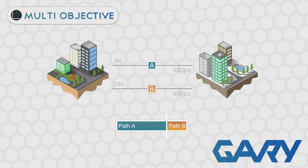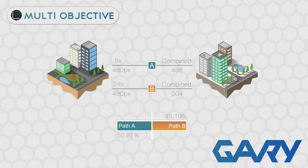So when caring about distance both paths are equally good, and when caring about time path A is three times as fit. What would you expect the fitnesses to be when we take both objectives into account? Well, the combined fitness for path A would be 480 pixels plus 8 seconds — so 488 — and for path B: 480 pixels plus 24 seconds = 504. That means path A has a 50.81% chance of being selected and path B has a 49.19% chance — almost 50/50, even though one path takes a third of the time.